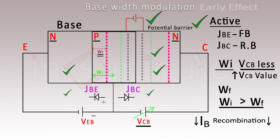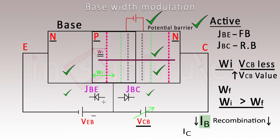What is the effect on collector current IC? Collector current is generated by the movement of electrons from the base to the collector. Since the base width is now smaller, recombination of electrons in the base is reduced, so more electrons drift from the base to the collector — this increases the collector current IC.